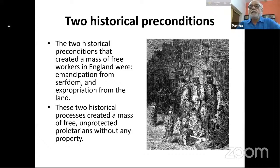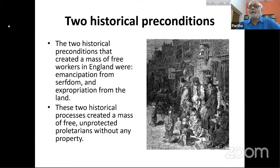The term proletarian is an old Latin word that came to mean, from the 19th century, industrial workers without any property. The entire socialist literature from the 19th century uses this term.